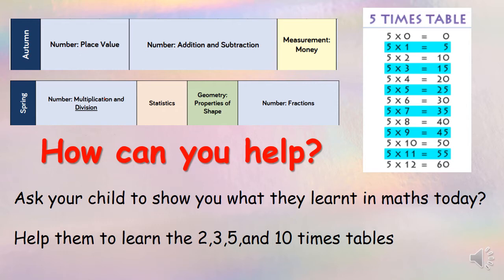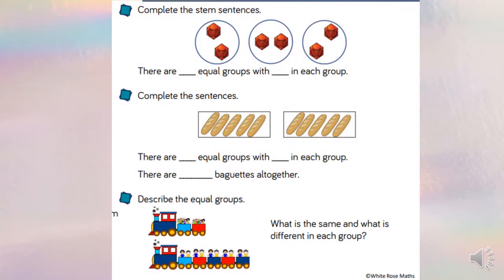But how can you help? Ask your child to show you what they learned in maths today and talk to them about what they did. You can apply their learning in skills around the home. Help them to learn the 2, 3, 5 and 10 times tables — you can see the 5 times table here. It's really important that your child can learn the times tables in and out of order. We will be looking at multiplication in Year Two at the beginning of the spring term, and the children are looking at STEM sentences.